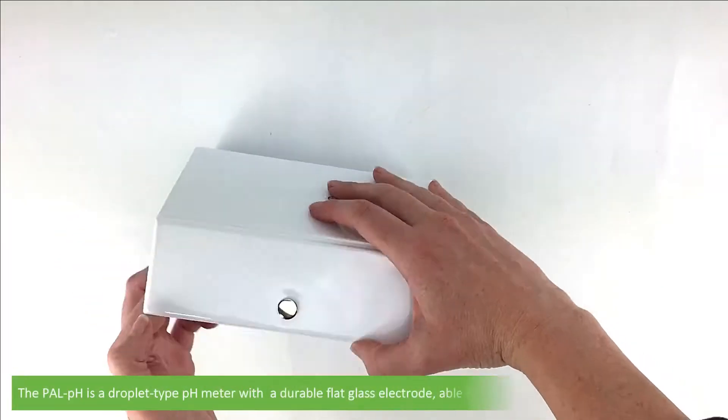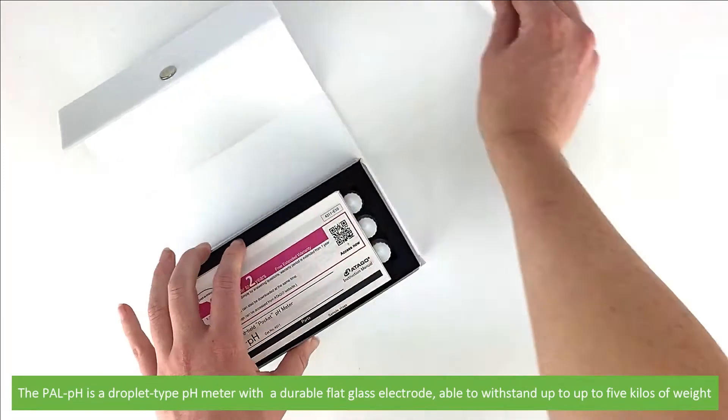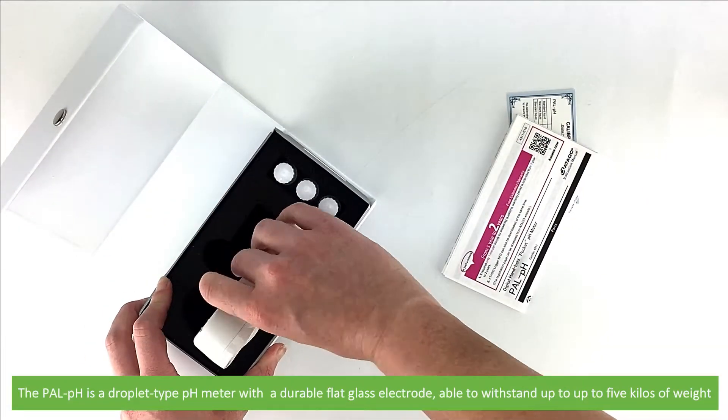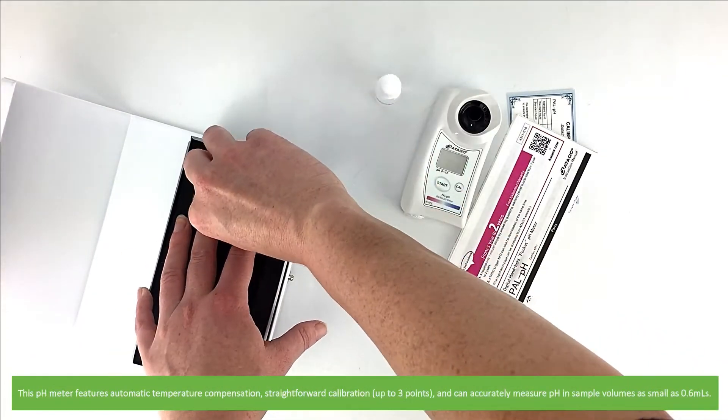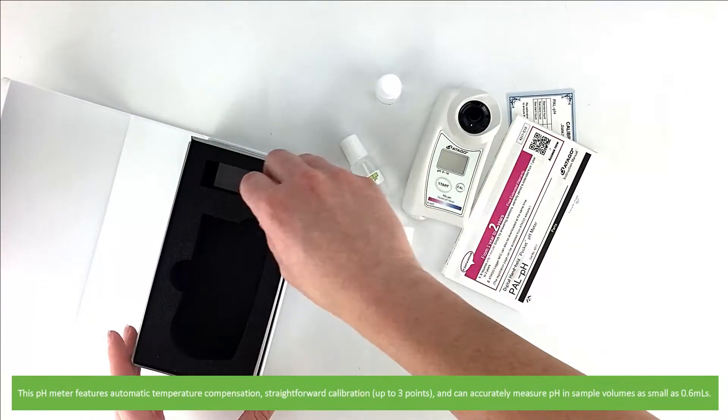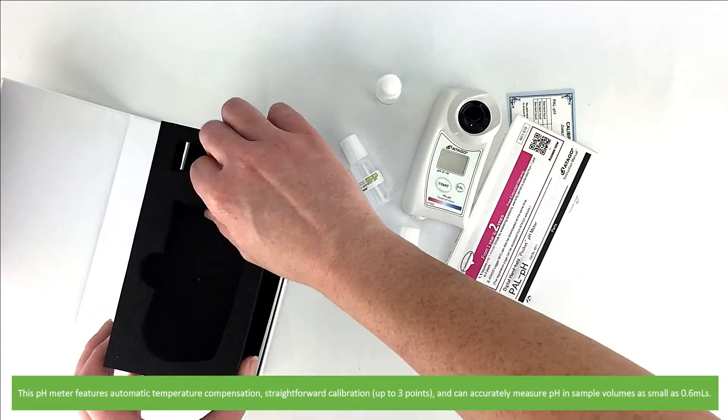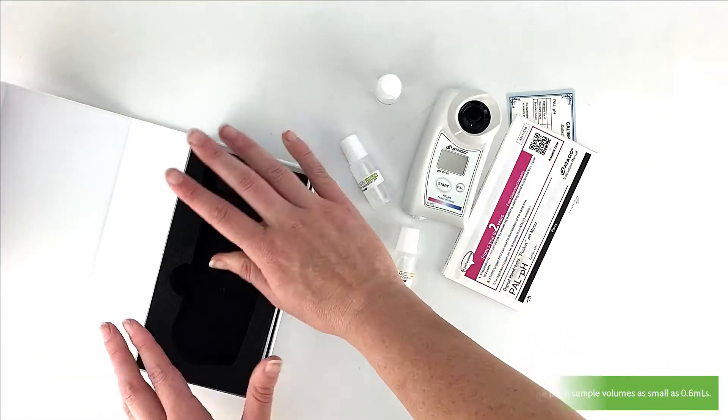The PAL PH is a droplet type pH meter with a durable flat glass electrode able to withstand up to five kilos of weight. This pH meter features automatic temperature compensation, straightforward calibration up to three points, and it can accurately measure pH in sample volumes as small as 0.6 mils.